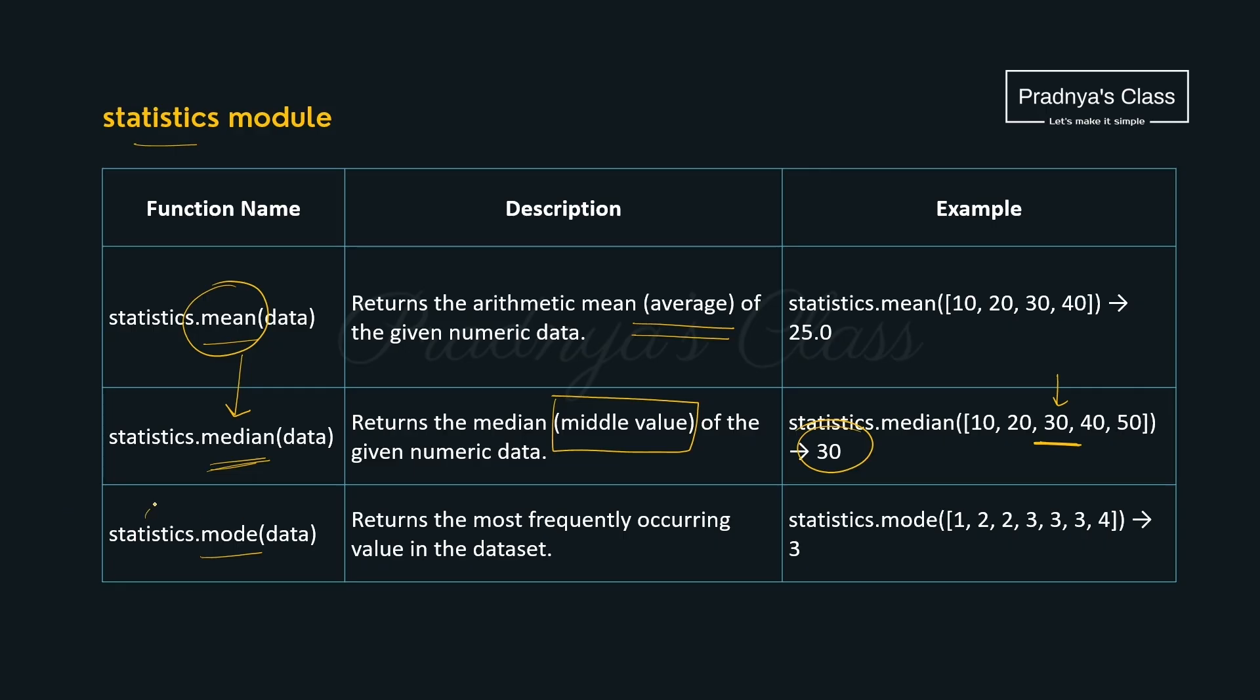The third function from this module is mode function. It returns the most frequently occurring value in the data set. Look at the example. 3 occurs thrice. That's why we got 3. Like math module we must import statistic module also using import statement.